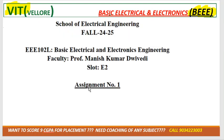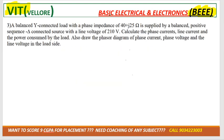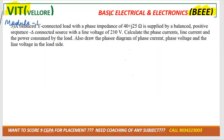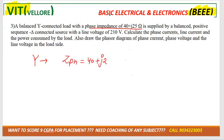We are doing assignment number one, question number three. They said a balanced star-connected load — star means Y. The phase impedance, ZPH, is given as 40 plus J25.